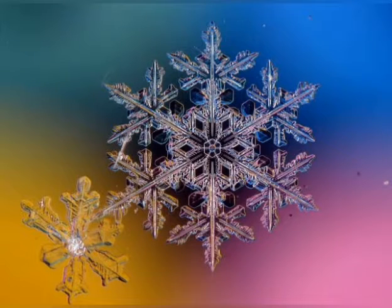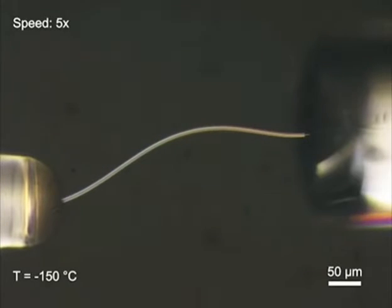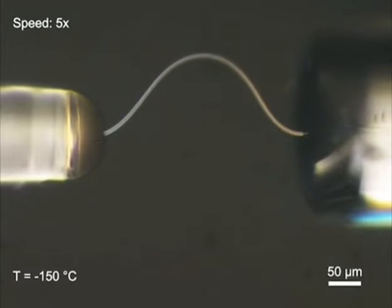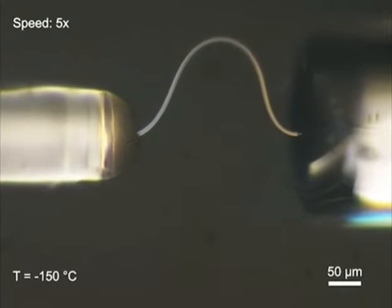Springy ice crystals that bend without breaking are offering scientists new insights into ice's fundamental properties. Ice is known as a hard brittle material, but researchers in China and the US have now made flexible ice microfibers that can bend out of shape without cracking.